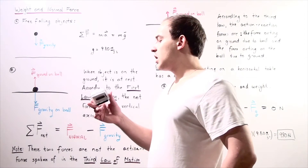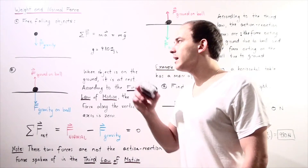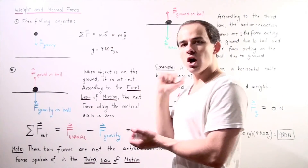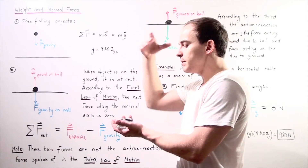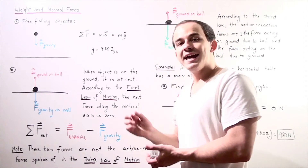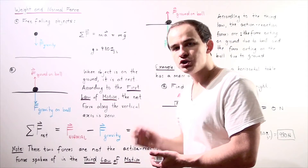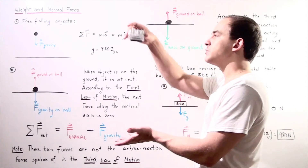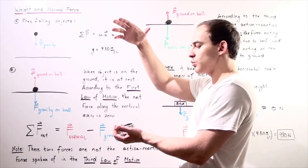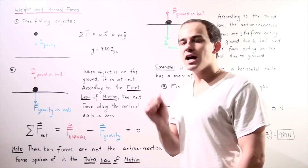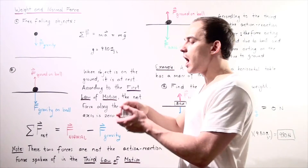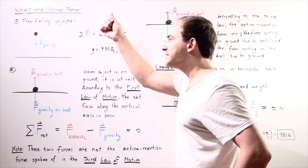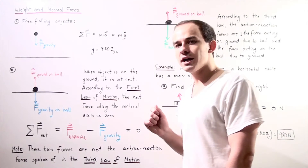Suppose I take a camera and allow it to free fall — I take it and let go. As soon as I let go, the camera begins to free fall and accelerates downward due to gravity. According to the second law of motion, because the object begins accelerating, a net force must be acting on it, and because it is moving downward, that net force acts downward along the y-axis.